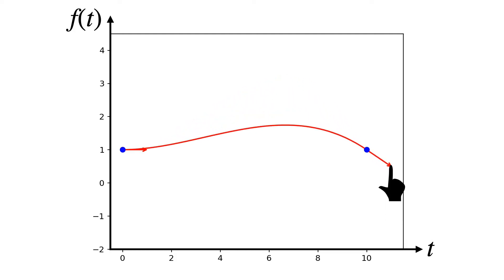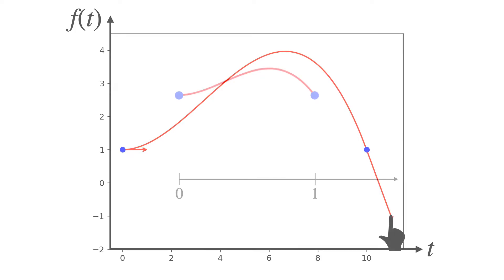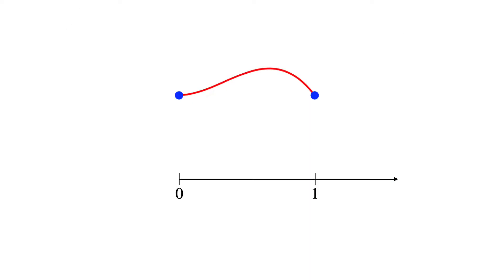Remember in part one we saw how you can manipulate a curve by its tangent? This works pretty well. Except when the interval of the curve is between 0 and 1, which is pretty common. Then the tangents get very long.